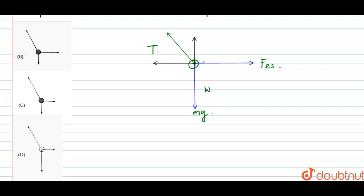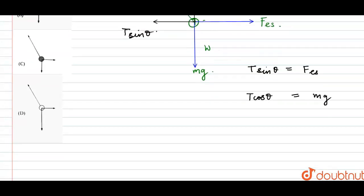The tension components will be T cos theta and T sin theta, where theta is 30 degrees. We have the equation T sin theta equals the electrostatic force FES, and T cos theta equals the weight mg. So we have two equations.